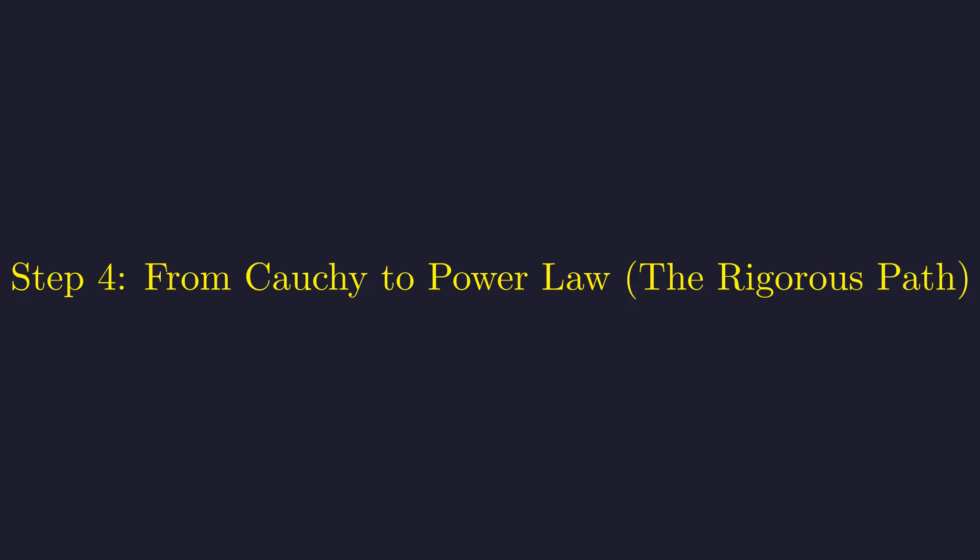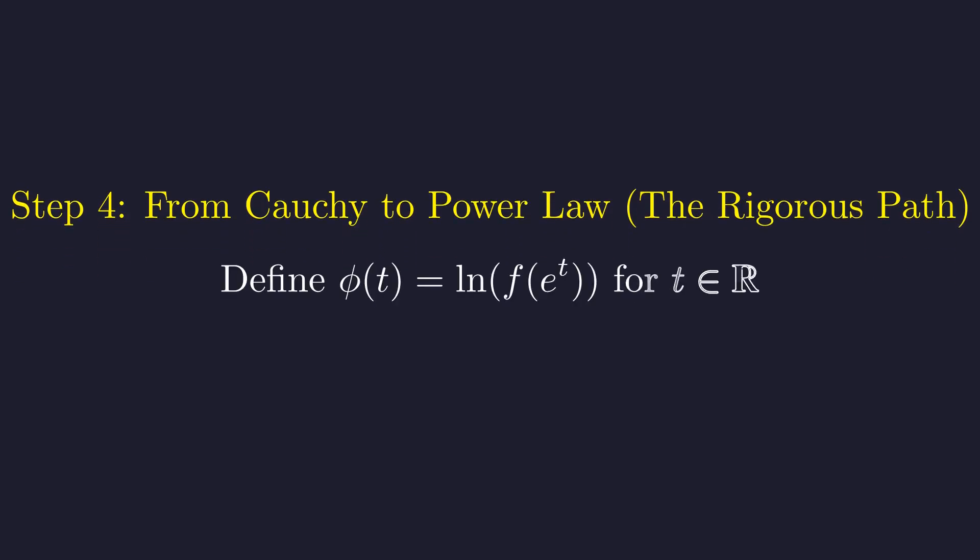Now here's something crucial. A multiplicative function isn't automatically a power function like x to the power k. We need to use the problem's limit condition to prove that it must be. Here's where we get clever with a change of variables. Let's define a new function, phi of t, as the natural log of f of e to the t. This transforms multiplication into addition, a classic mathematical trick.